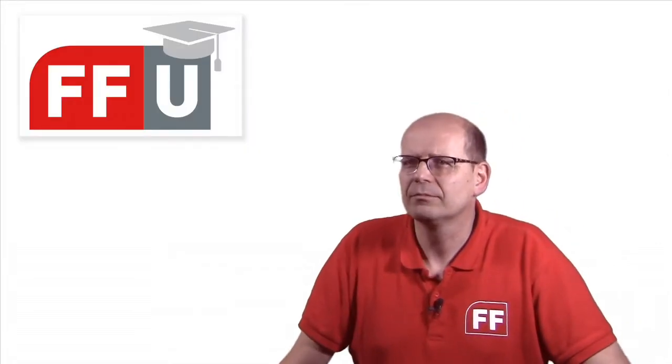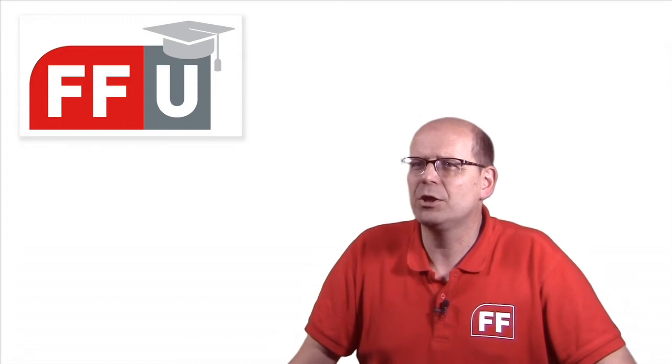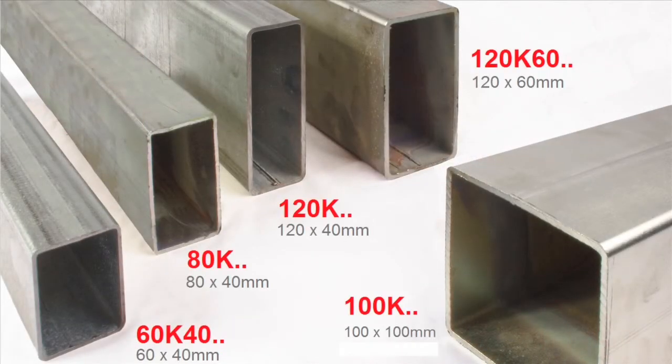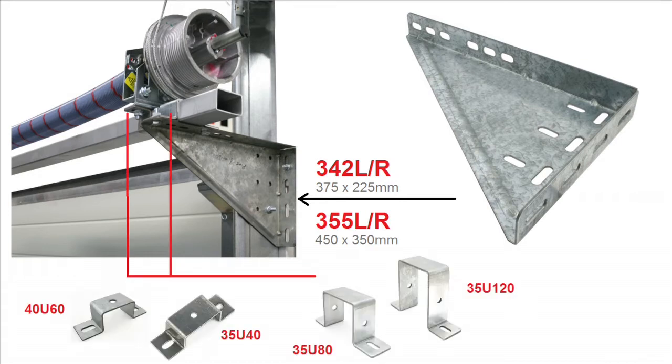Could you explain the system in detail? Yes. The springs and shafts are mounted on a steel box beam. Flexiforce has several sizes available. The beam is supported by a big triangular plate, for example 355 L&R. Fixation of the box beam on the triangular plate is done with installation brackets and bolts and nuts.